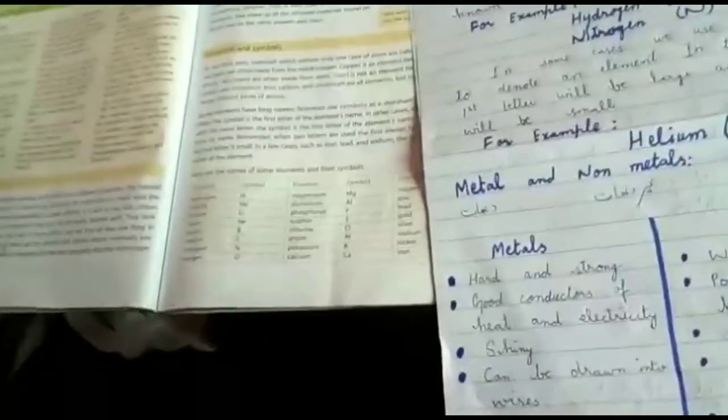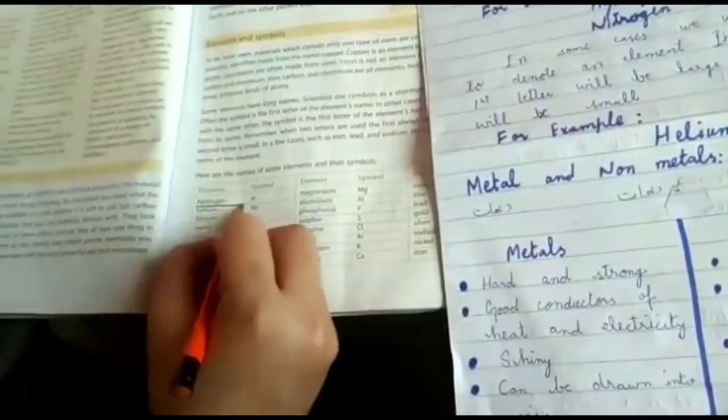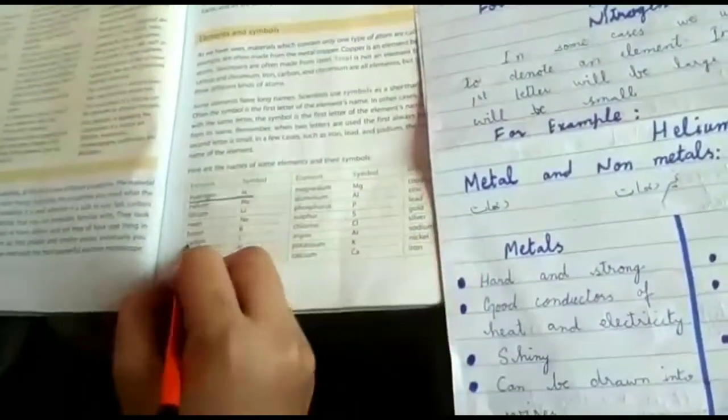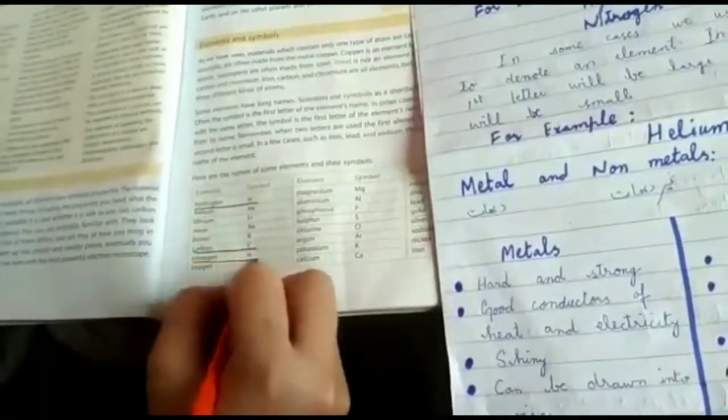Now students, highlight some important symbols like hydrogen which we use in our daily life, carbon, nitrogen, oxygen, calcium, etc.